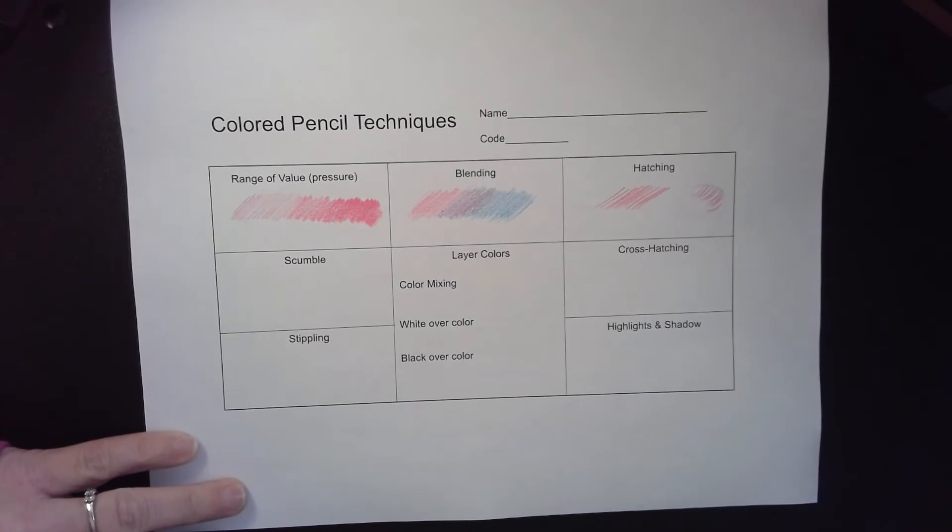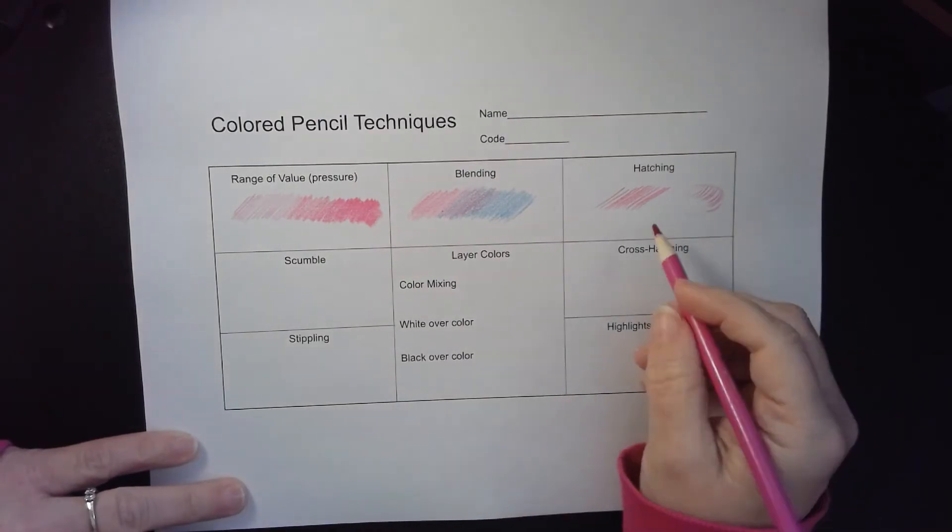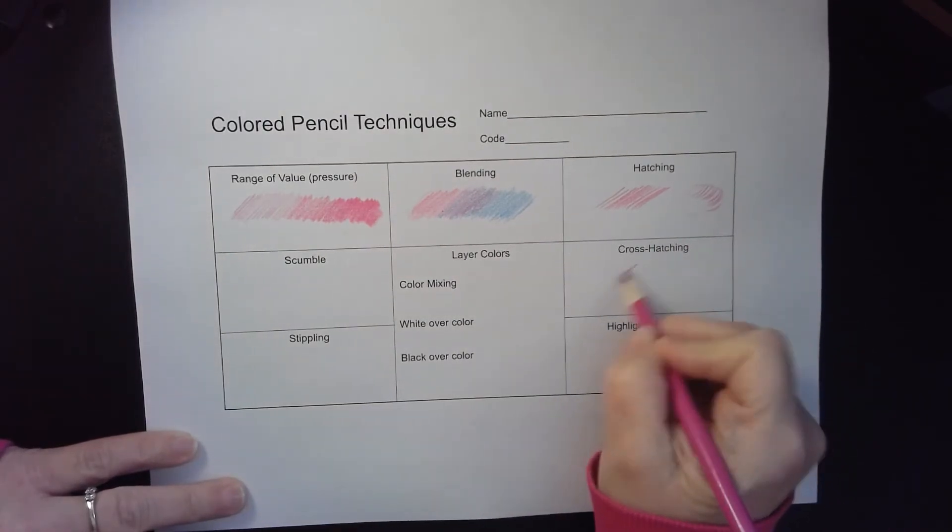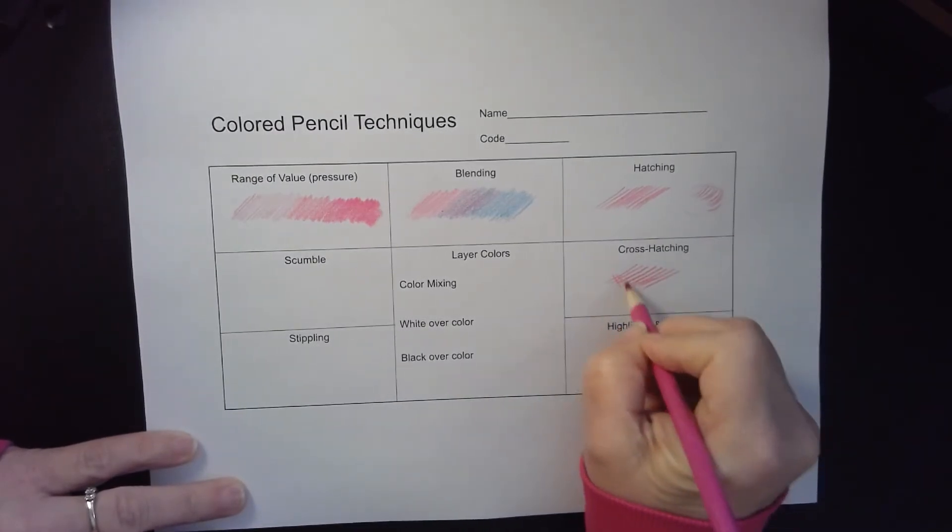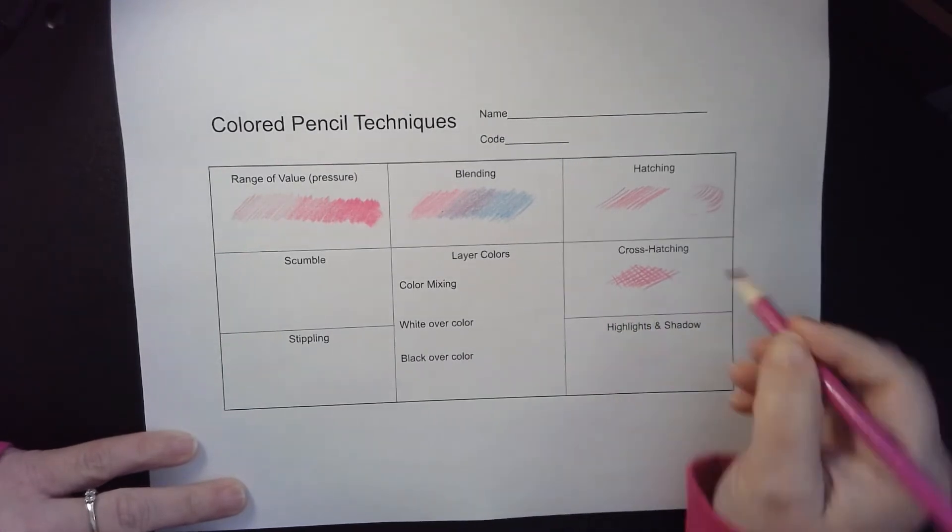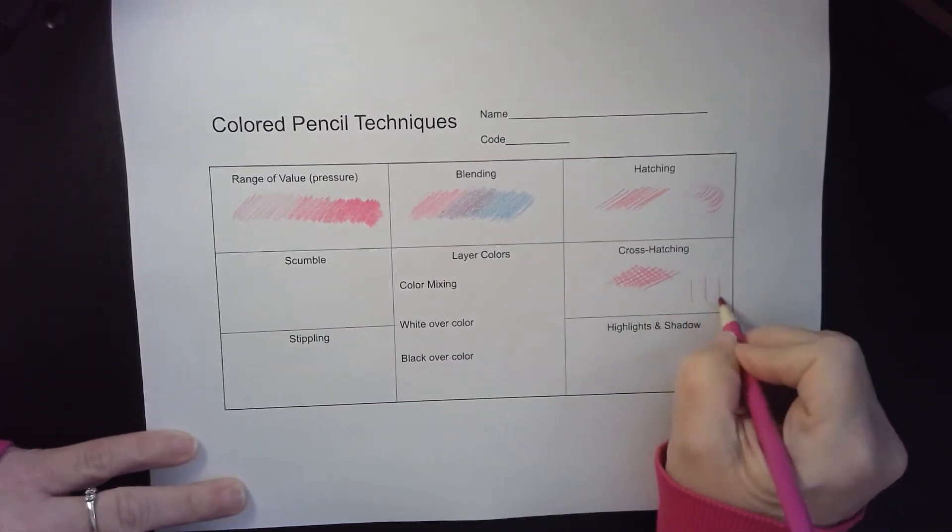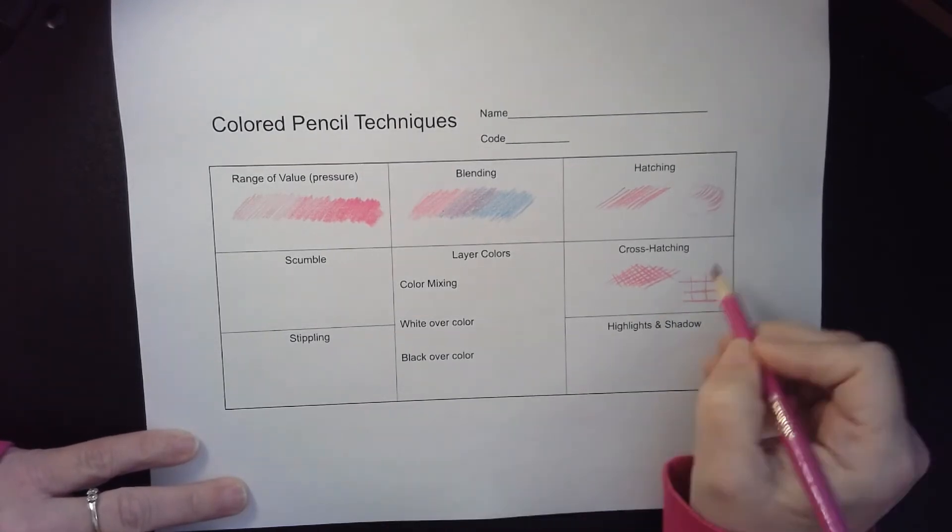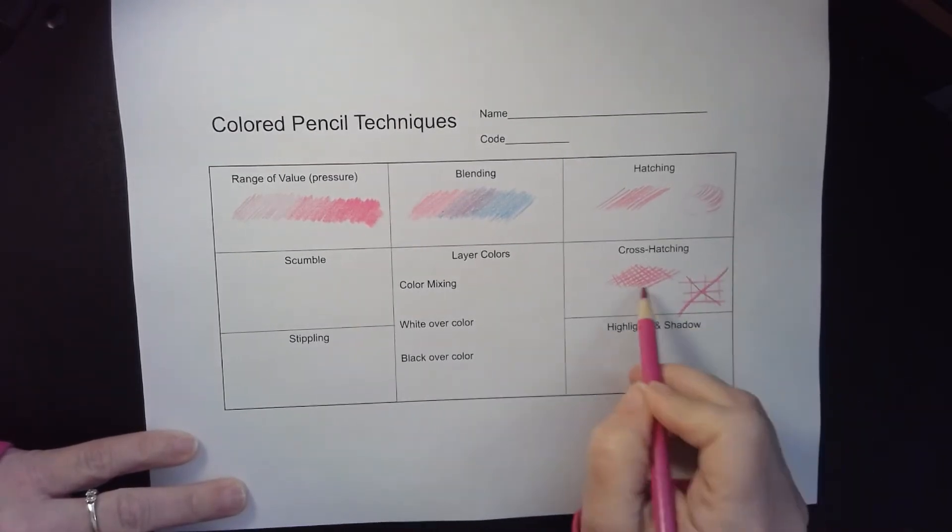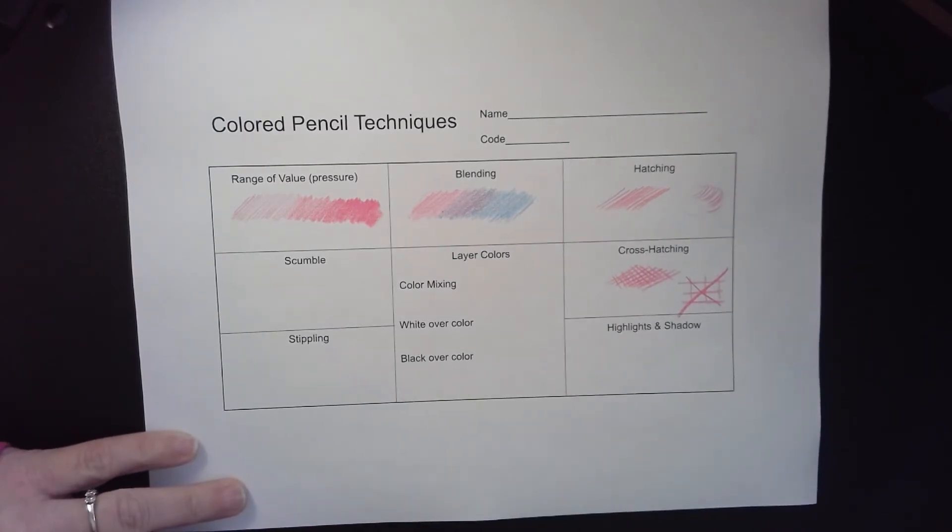Moving down here, cross-hatching is almost the exact same thing. Hatching to start, and then you come across at a different angle to cross over it again. It needs to be really close. When we see people doing this, it looks like you're making a tic-tac-toe board and that is not what we want to see. We want them to be nice and close like you see here.